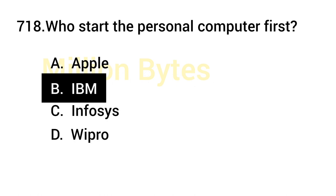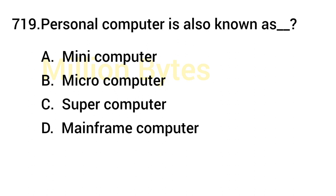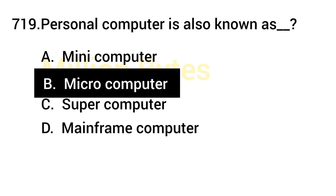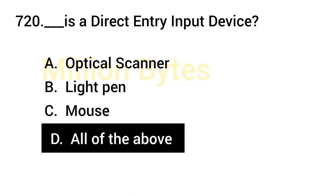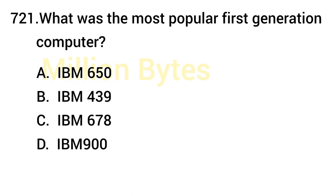IBM started the personal computer first. Personal computer is also known as Microcomputer. Which is a direct entry input device? Answer is all of the above — Optical Scanner, Light Pen, and Mouse are all direct entry input devices.